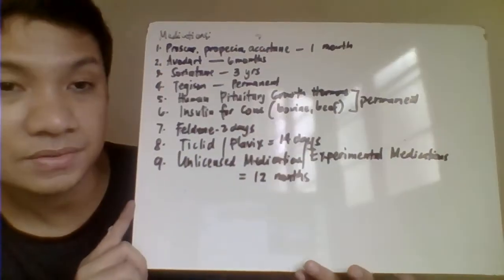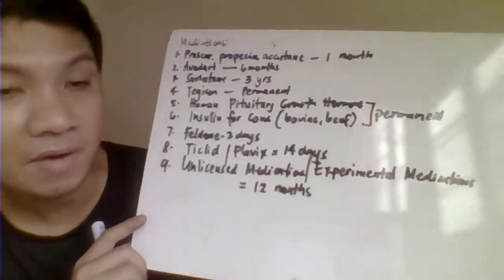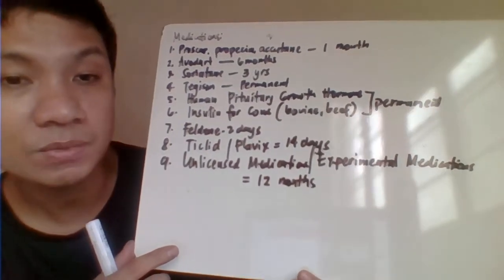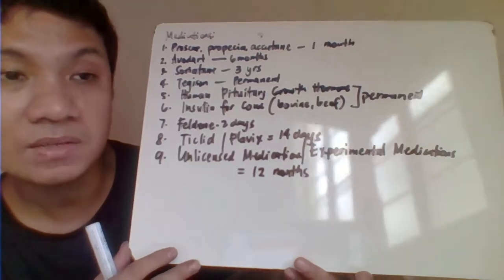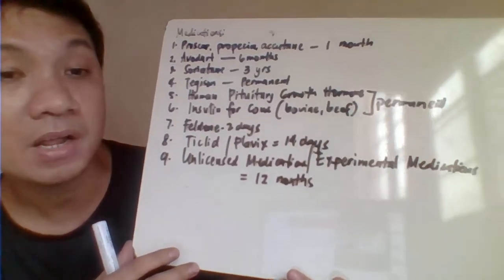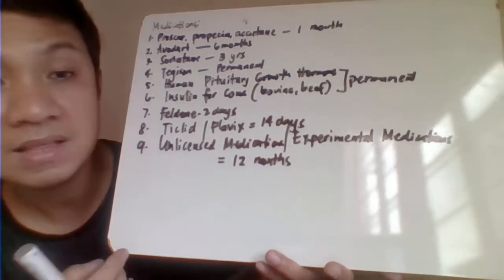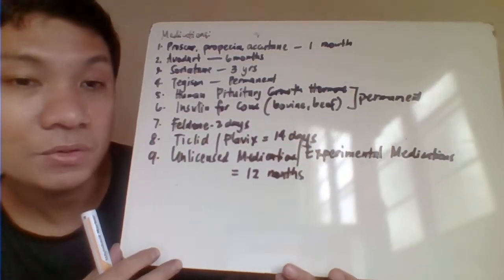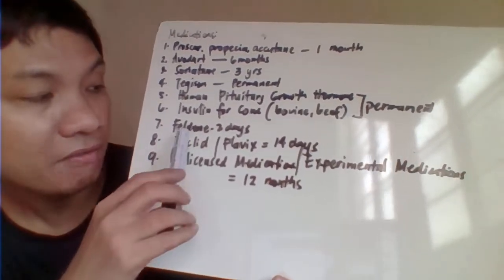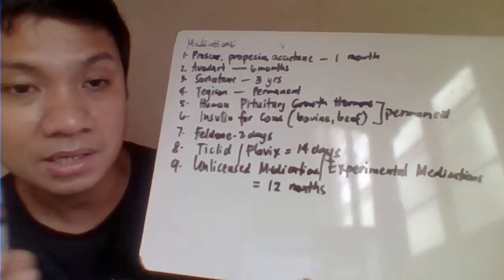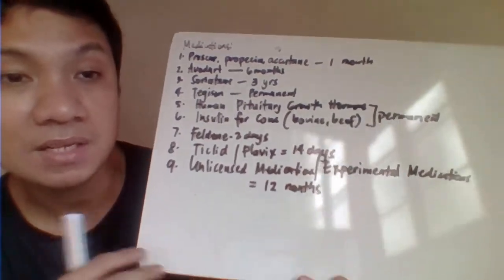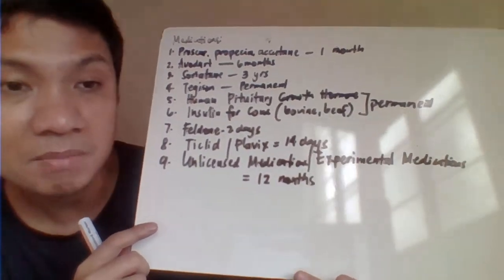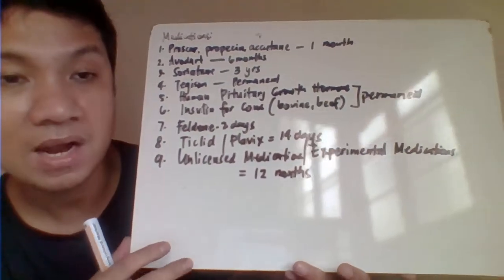Regarding medications: Proscar, finasteride, and Accutane have a one-month deferment. Amiodaron has a six-month deferment. Soriatane has a three-year deferment. Tegison for psoriasis treatment results in permanent deferment. Patients given human pituitary growth hormone or bovine insulin are permanently deferred due to the risk of mad cow disease. Feldene and Ticlid/Plavix have a 14-day deferment as they decrease platelets, making patients unsuitable for platelet concentrate donation. Unlicensed or experimental medications result in a one-year deferment.